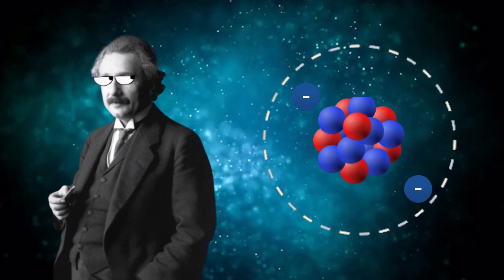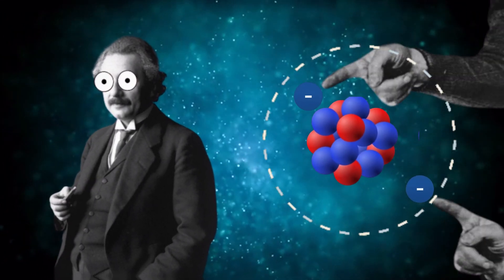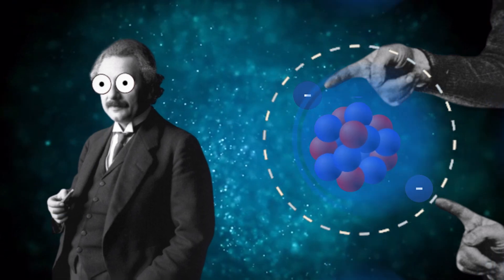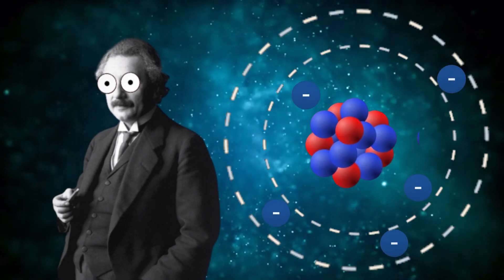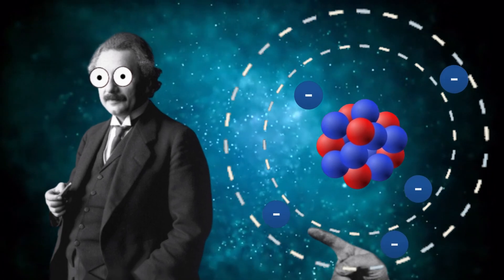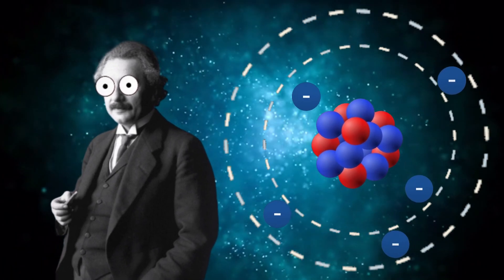This means that the first shell of the atom can only hold two electrons because it only contains a single orbital with a certain energy level. The additional shells can contain more electrons because they have additional orbitals and sub-orbitals.